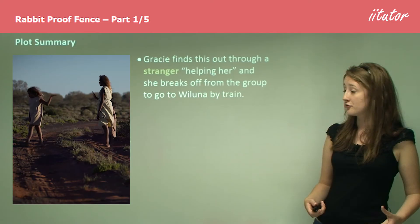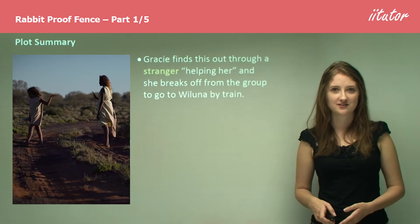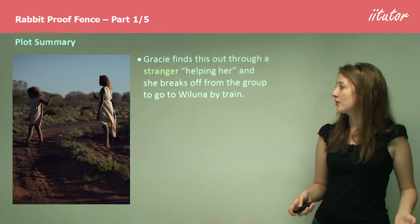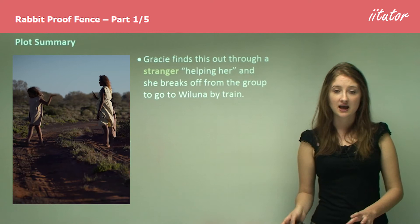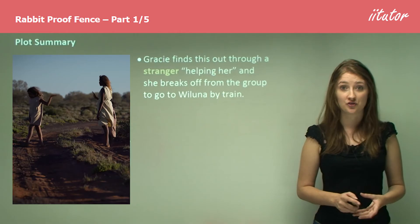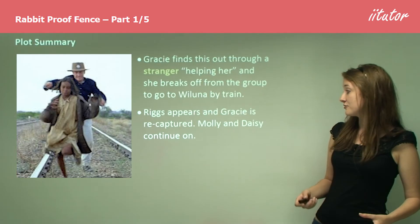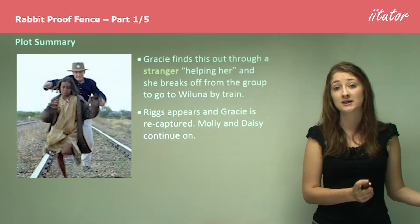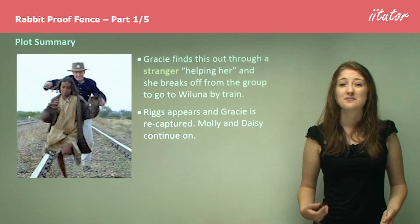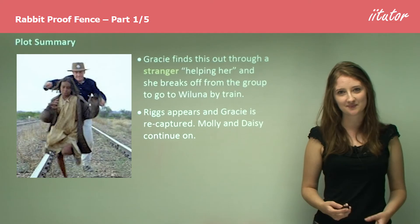Gracie finds this out through a stranger who's pretending to be helping her. We know the stranger isn't helping her but is instead trying to lure her back to the camp, and she breaks off from the group to go to Wiluna by train. Riggs appears and Gracie is recaptured. Molly and Daisy realise they can't do anything about it, so they decide to continue on their journey to get back home, hoping they can help Gracie once they're there.